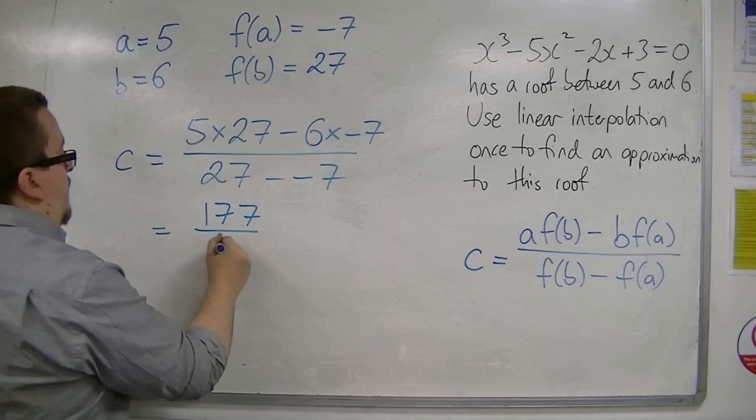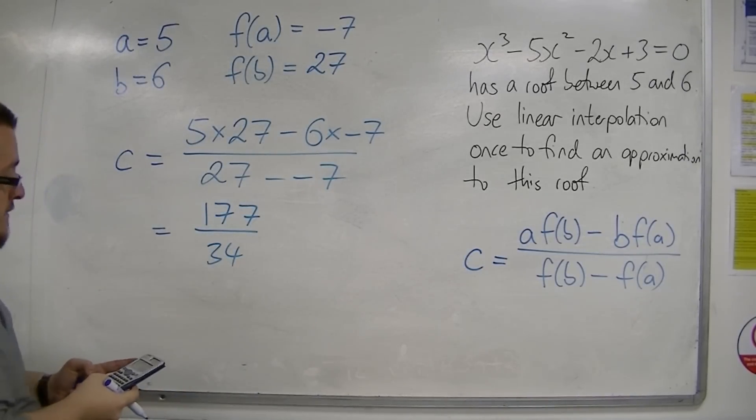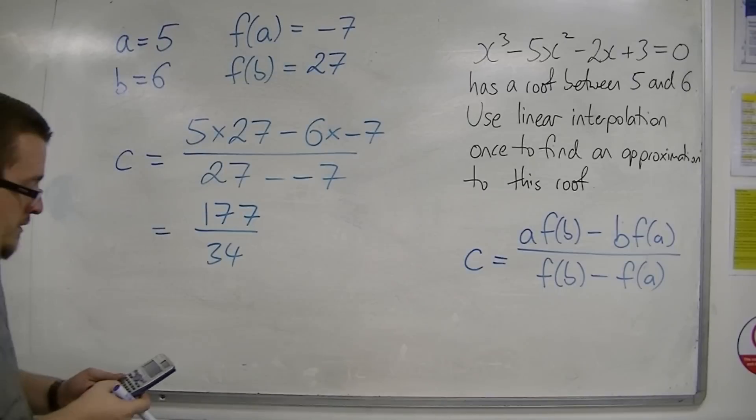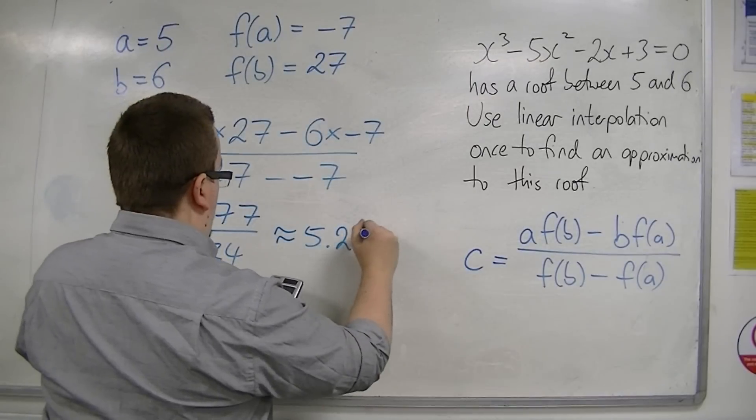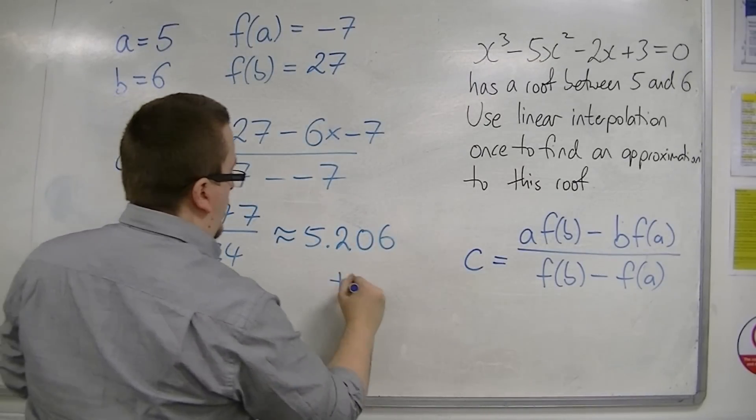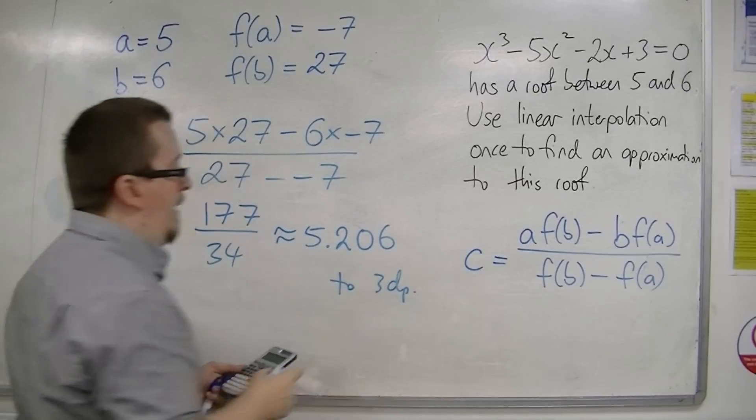And on the bottom we're going to have 34, so 177 divided by 34 is approximately 5.206 to 3 decimal places.